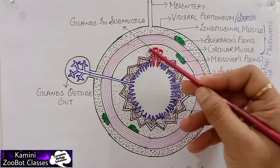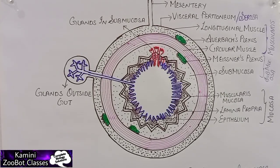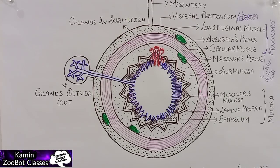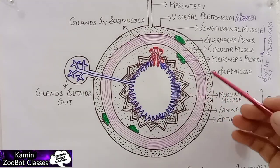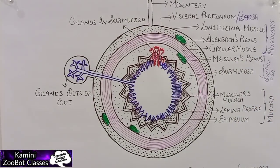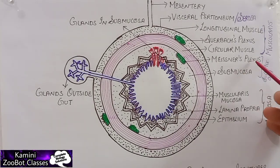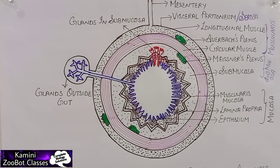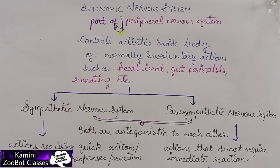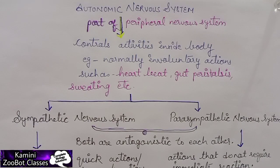The third layer is submucosa. It is formed by loose connective tissues richly supplied with blood and lymphatic vessels. It also consists of a network of nerve cells and sympathetic nerve fibers called Meissner's plexus, also called the submucosal plexus of Meissner. Meissner's plexus is present between the muscular coat and the mucosa layer. The main function of this plexus is to control the secretion of intestinal juices. So we have learnt about two plexuses: Auerbach's plexus and Meissner's plexus.